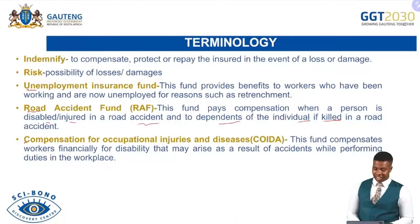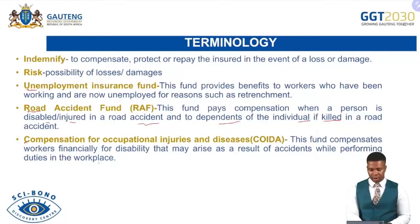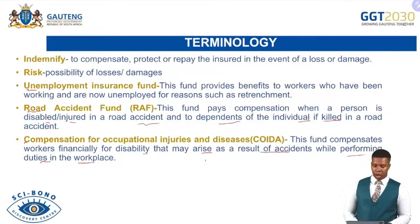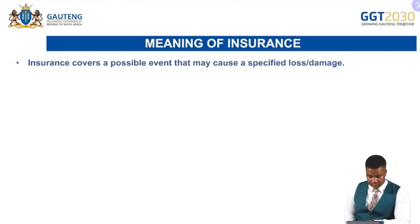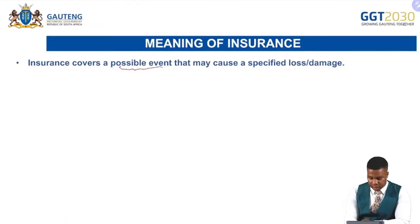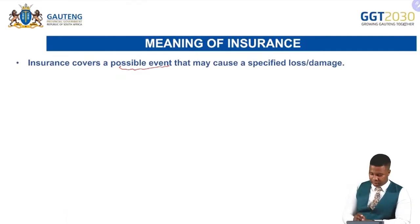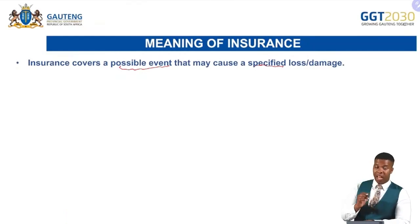The Compensation for Occupational Injuries and Disease Act focuses more on the business — it compensates workers financially for disability that may arise as a result of an accident while performing their duties in the workplace. Now let's look into the meaning of insurance. Insurance covers a possible event — when we say a possible event, we mean it may or may not happen.